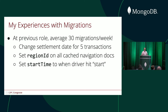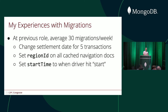At my previous role at Booster, by the time I left, we were shipping about 30 migrations a week. These are all just one-off scripts that go into a GitHub repo, and we run them in order to make sure our data is consistent. A couple of examples: one script changed the settlement date for five transactions because the settlement date was wrong. Another example — we wrote some code that relied on driving directions. We stored driving directions as GeoJSON line strings in MongoDB. When we first wrote that code, we were only doing that logic for one region. So when we decided to expand to multiple regions, we needed to set a region ID property — adding a new field. That's a pretty standard migration.